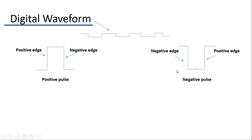The right side of the positive pulse has a negative edge, while the left side of the negative pulse also has a negative edge.